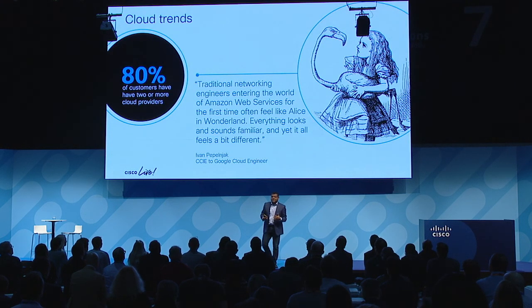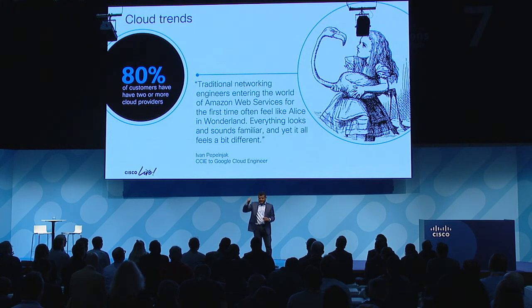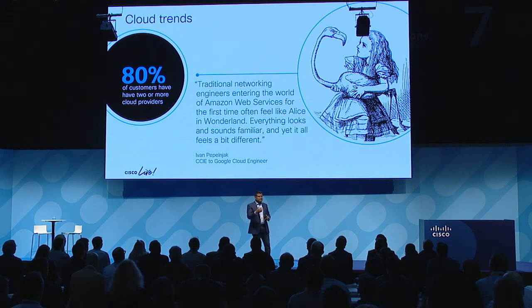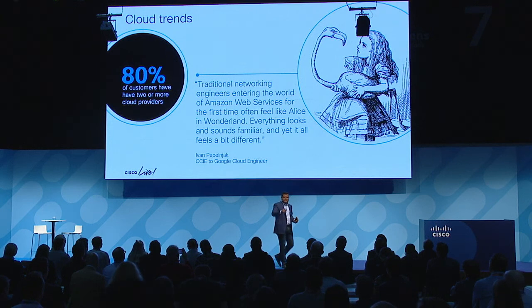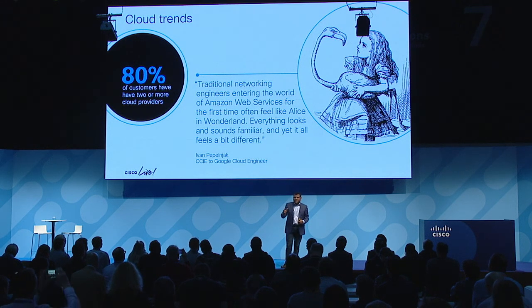I really like this quote from a CCIE — I'm a CCIE myself, I've been doing networking for 23 years. This is a quote from Ivan who says that when traditional network engineers look at AWS, for example, it's a little bit like Alice in Wonderland — everything seems similar, but it doesn't feel quite the same. How can Cisco help you navigate this new world?